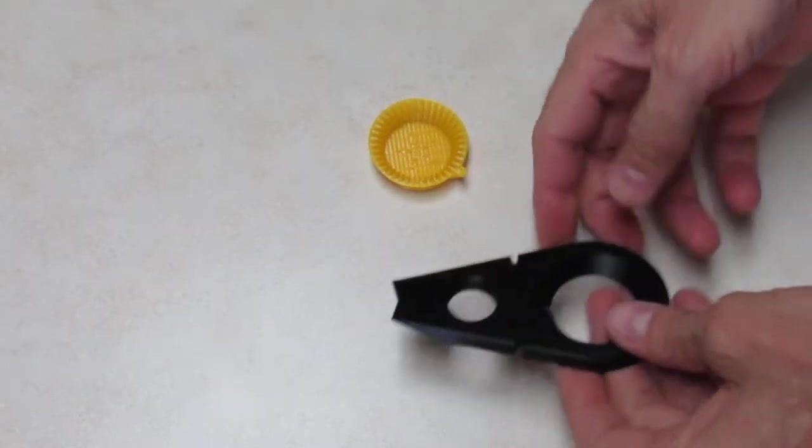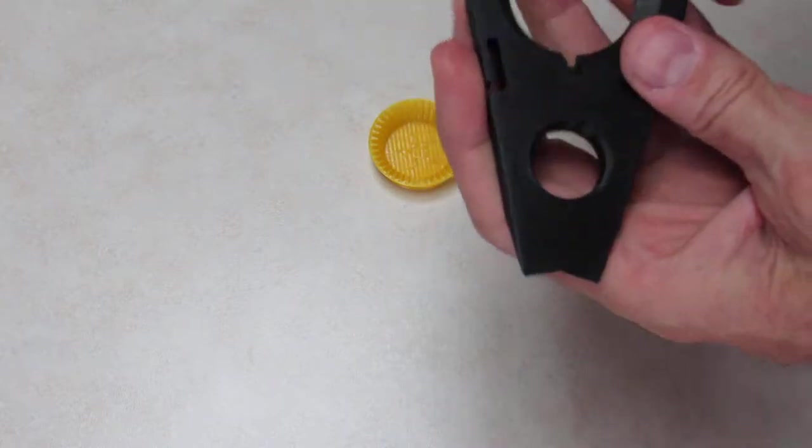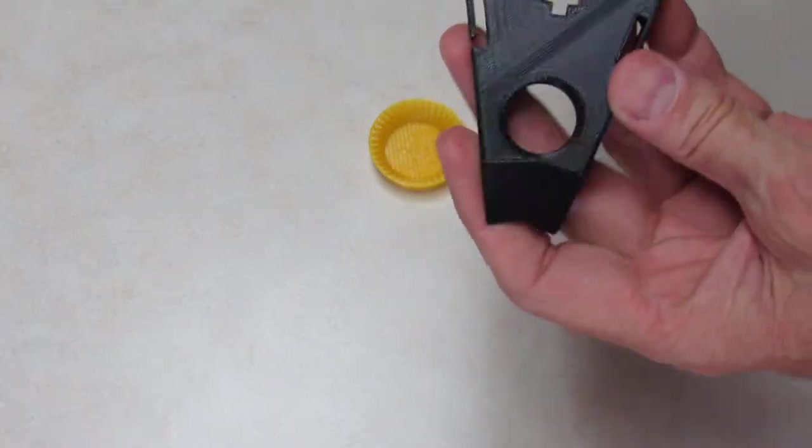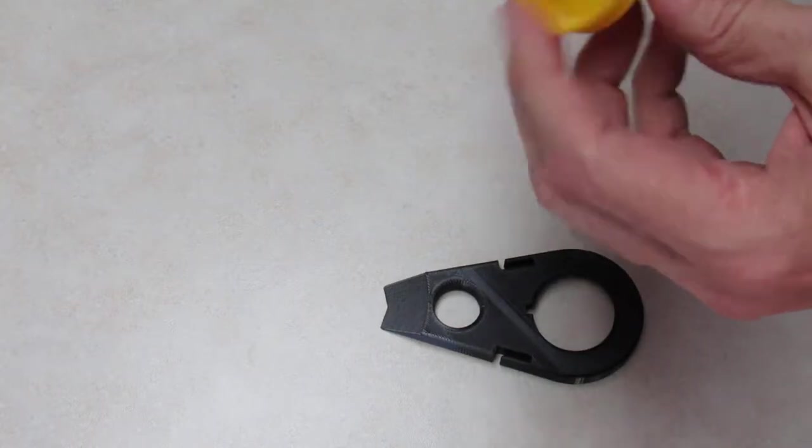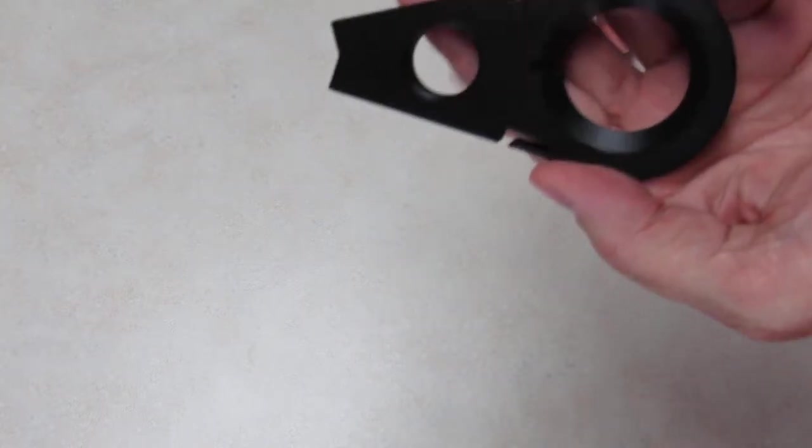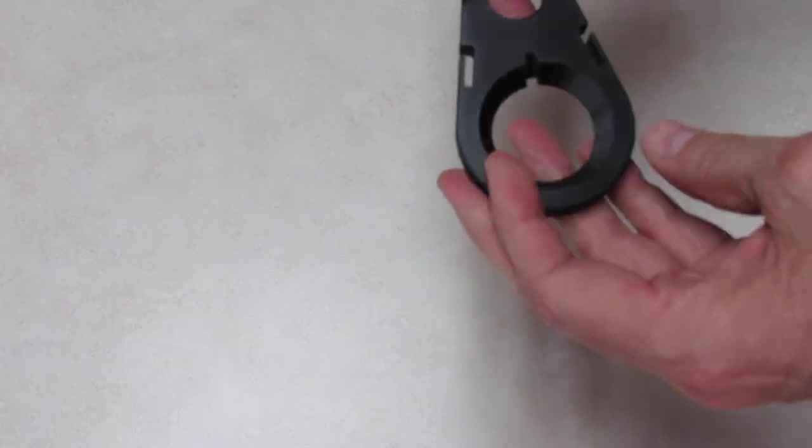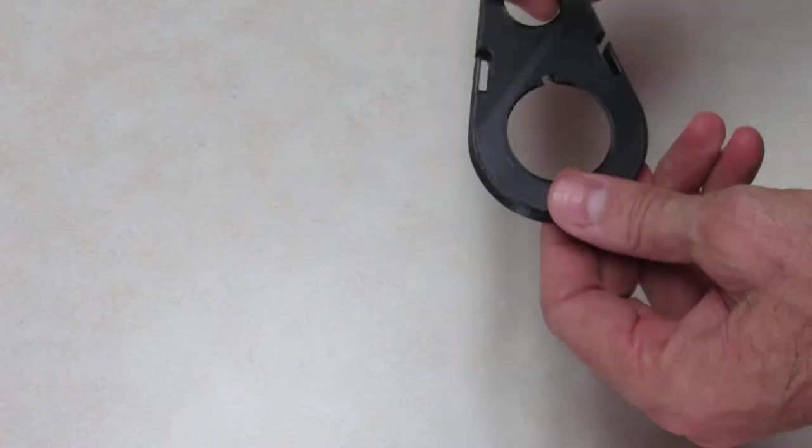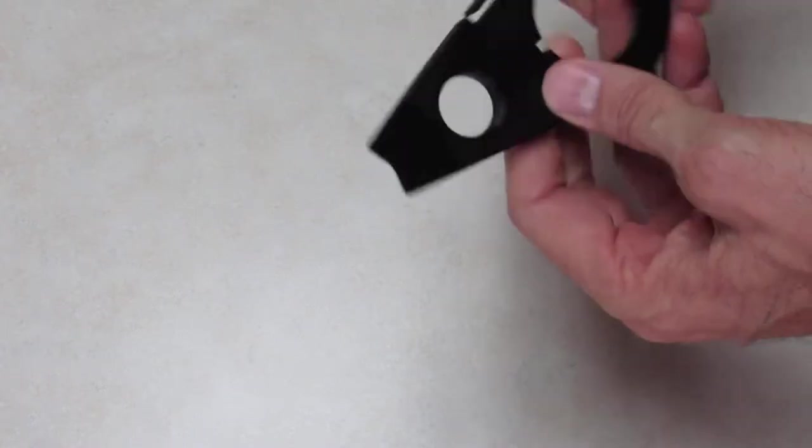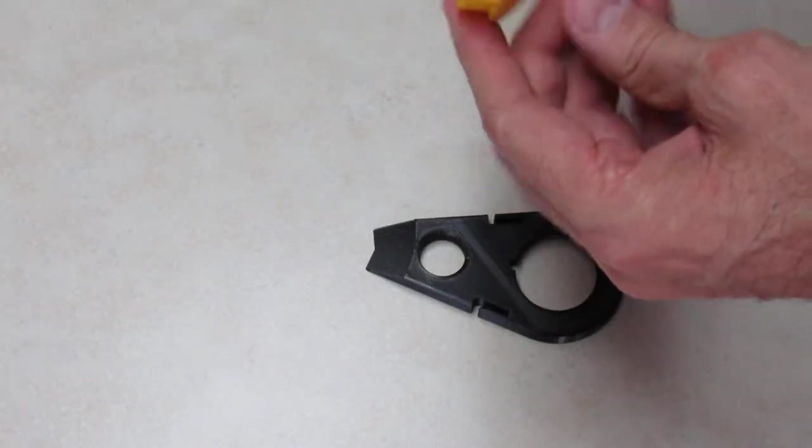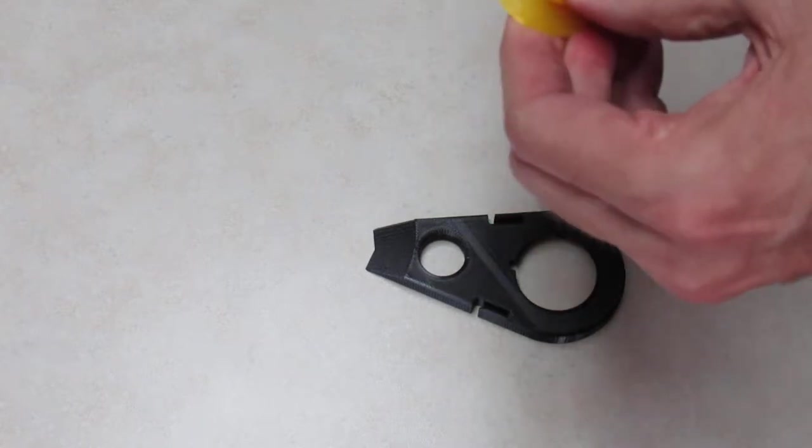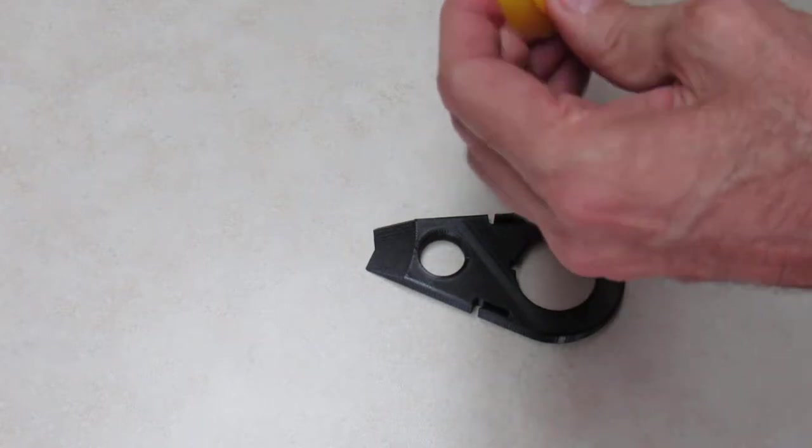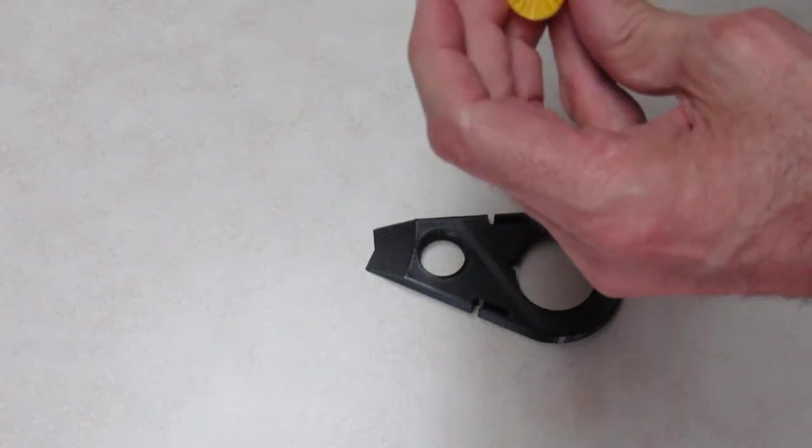So this device comes in two parts. One that we'll call the pop-top opener and another we'll call the bottle opener. The pop-top opener should be printed from rigid plastic, PLA or something like that. The bottle opener should be printed from a flexible filament: TPU, NinjaFlex, PolyFlex, something like that.